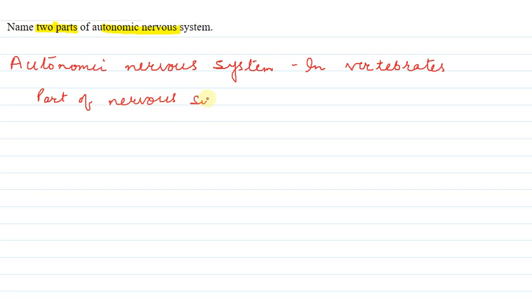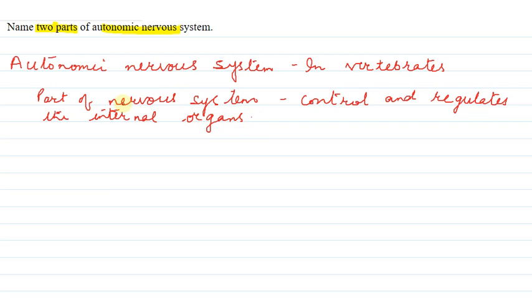Now our question says, two parts of autonomic nervous system. So it controls and regulates the internal organs. It controls and regulates the internal organs without any conscious effort of the organism.